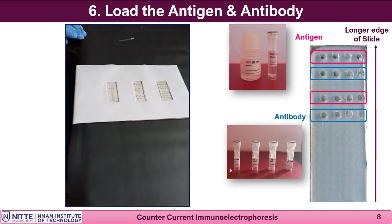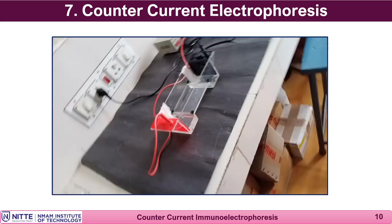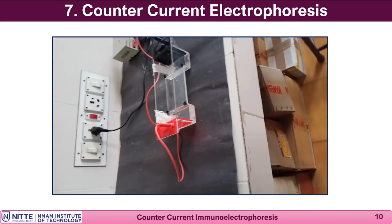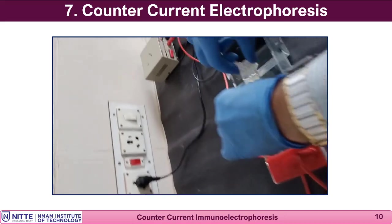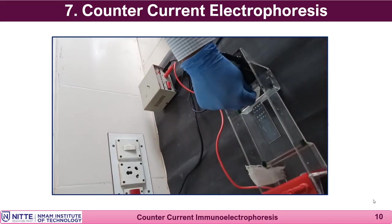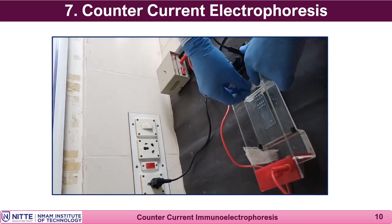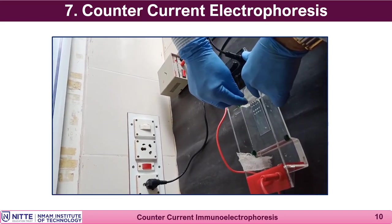Once loading is done, the slide is ready to be placed on the electrophoresis platform. The antibody side should be connected to the positive pole and the antigen side to the negative pole. The positive pole is the red side and the black is the negative pole. Bandage gauze dipped in buffer is kept at the edge of the slide — do not overlap the gauze onto the wells as the sample may get absorbed.